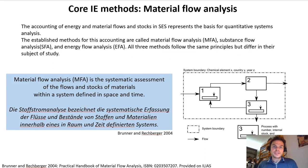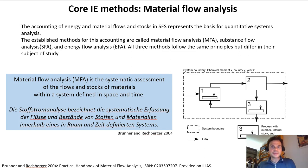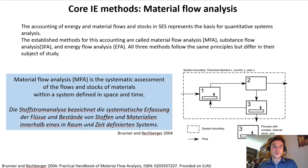The second core industrial ecology method is material flow analysis, which is the systematic assessment of the flows and stocks of material within a system defined in space and time. Compared to life cycle assessment, where we assess many different materials in a single product, material flow analysis typically focuses on single materials but assesses them across multiple products — tracing substances or materials across different economic sectors to study resource extraction, service provision, the use phase, and the potential for recycling and thus energy and emission savings.